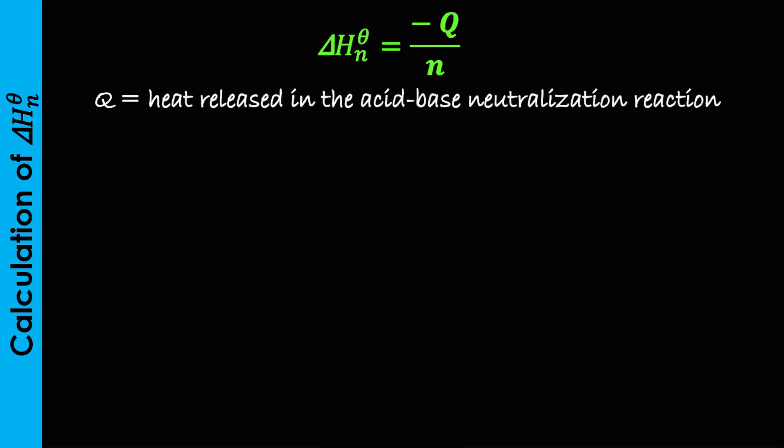To calculate the standard heat of neutralization of a reaction, we apply the formula delta H theta equals to minus Q over N, where Q is the amount of heat released in the neutralization reaction between the acid and the base. N is the number of moles of either the acid or the base obtained by multiplying their molar concentrations and volumes in dm cube. Of course, the negative sign shows its exothermic value.